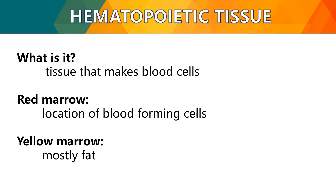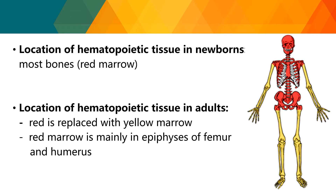For hematopoietic tissues — tissues that make blood cells — red marrow is the location of blood-forming cells, while yellow marrow is mostly composed of fat. In newborns, hematopoietic tissue is found in most bones because bones are still developing, giving them more red marrow. In adults, red marrow is progressively replaced by yellow marrow, with red marrow mainly remaining in the epiphyses of the femur and humerus.